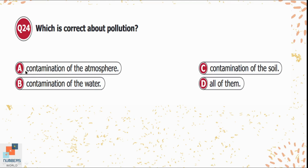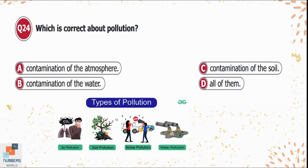Question 24: Which is correct about pollution? Option A: contamination of the atmosphere. Option B: contamination of water. Option C: contamination of soil. Option D: all of them. Option D is correct — pollution refers to all of these forms of contamination.